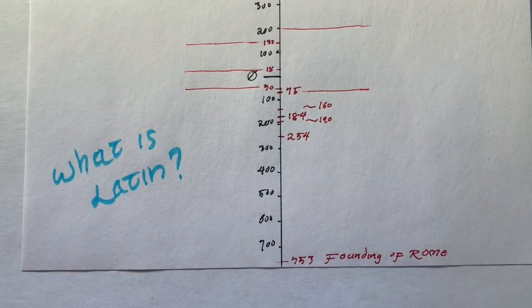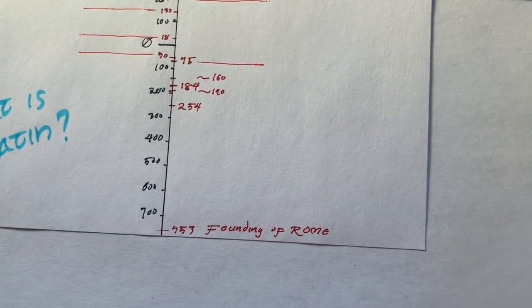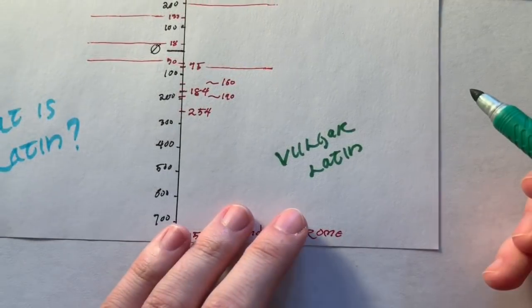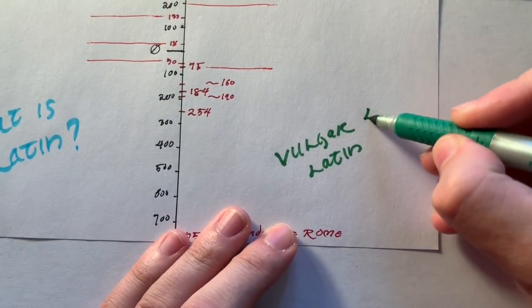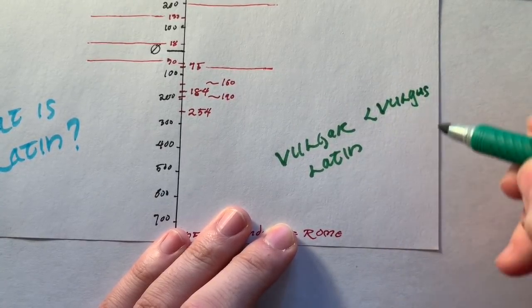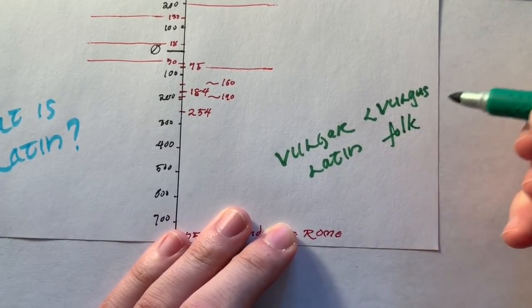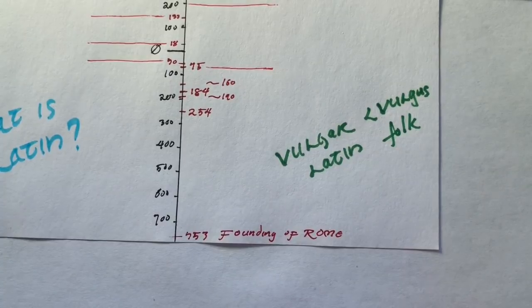While the Romance languages - Italian, Spanish, Portuguese, French, and Romanian, among others - are descended from Latin, we say that's from vulgar Latin. Here I'll make a note of the vulgar Latin. Vulgar Latin comes from the word vulgus, which is cognate with the English and German word Volk, and it means the people. So vulgar Latin is the people's language.